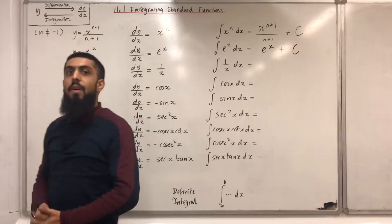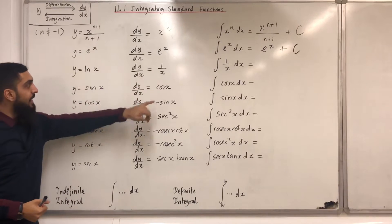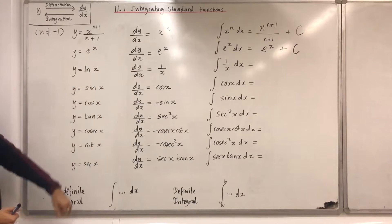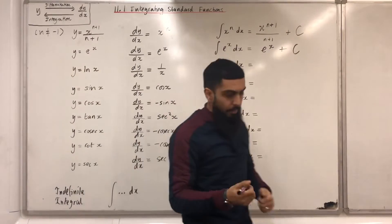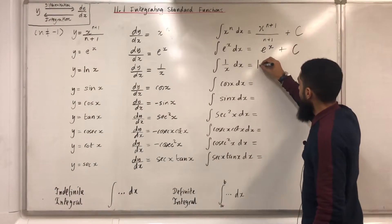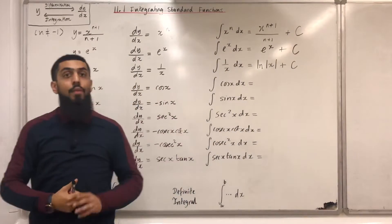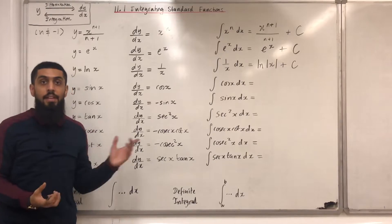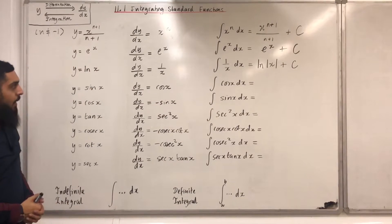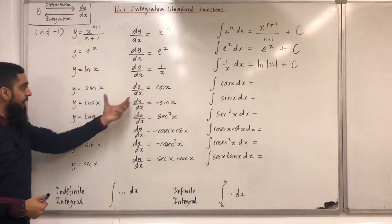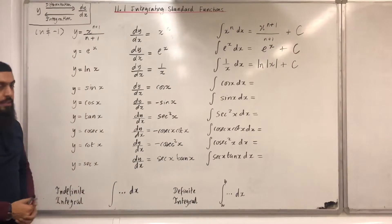The integral of 1/x with respect to x: we know that dy/dx equal to 1/x gives us y equal to ln x. Therefore the integral of 1/x with respect to x will be ln|x| plus c. There's a reason why it's mod x — I'm going to go through this when I cover areas in this particular chapter.